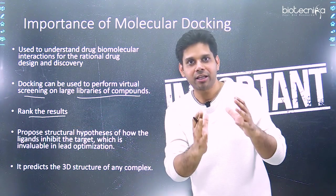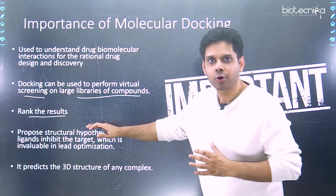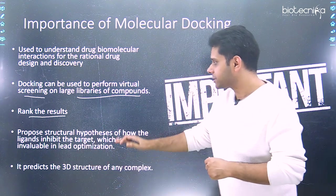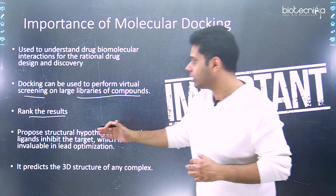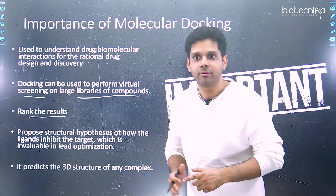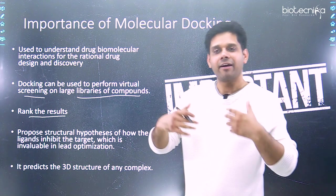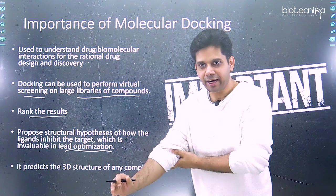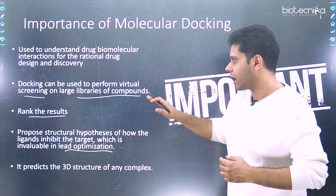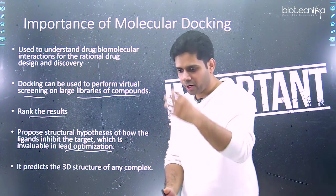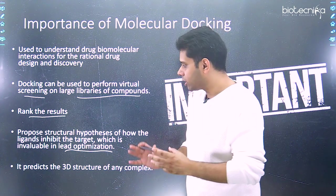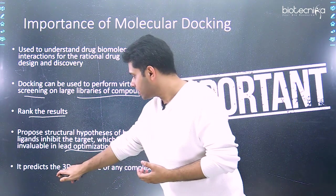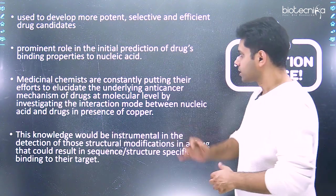At the molecular level we are chemistry — and this is where molecular docking helps us predict the chemistry of the drug and the ligand. It helps us propose a structural hypothesis of how ligands inhibit the drug, which is invaluable in lead optimization. We can find out which particular lead or molecule is best optimized and further optimize it. It also helps us predict the 3D structure of any complex.